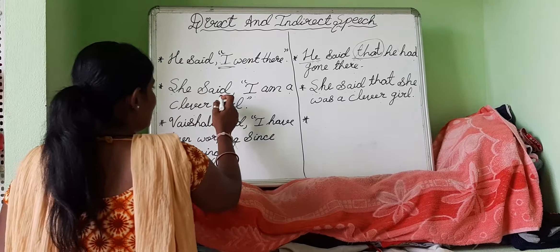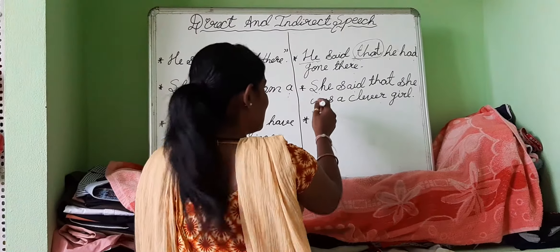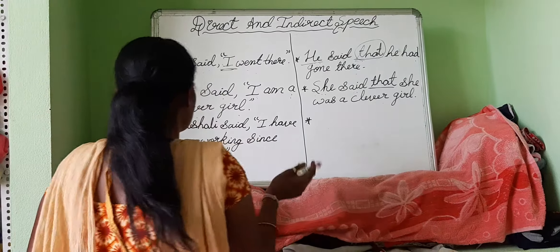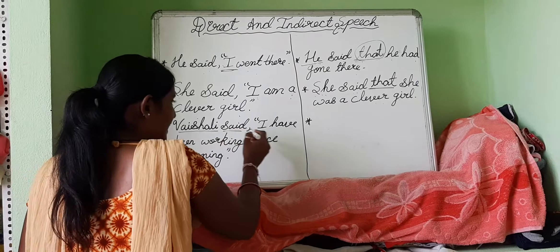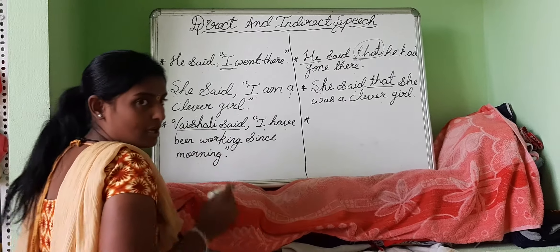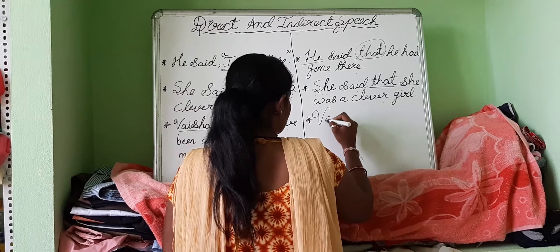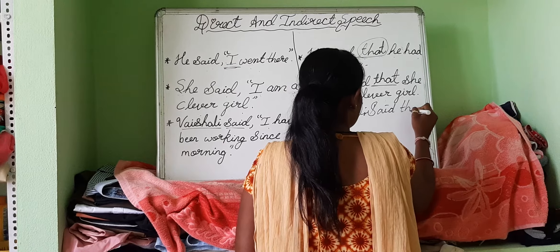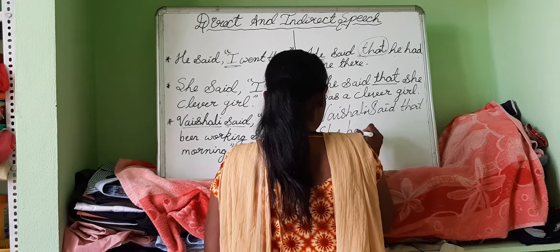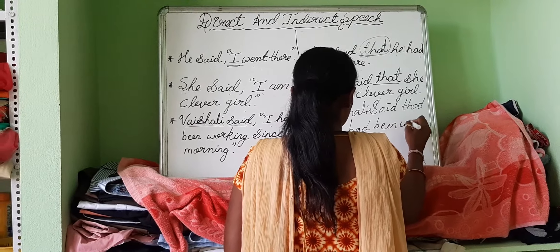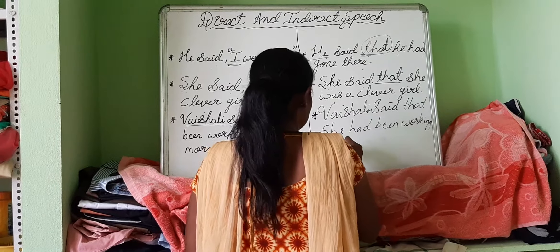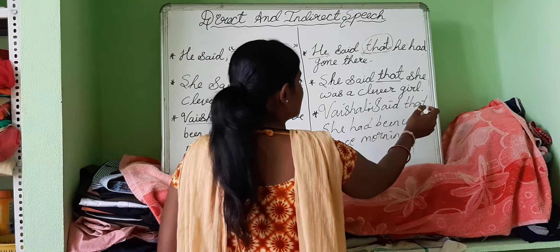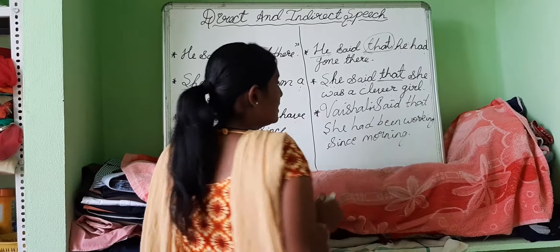The second example is, in direct speech: she said, I am a clever girl. But in indirect speech: she said that she was a clever girl. The third and the last example is, in direct speech: Vaishali said, I have been working since morning. In indirect speech: Vaishali said that she had been working since morning. In this sentence, we are adding the three main words: that, she, had.